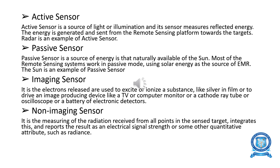Next, non-imaging sensors. Non-imaging sensors use electrons to excite or ionize a substance, and are related to image-producing devices like a TV, computer monitor, or cathode ray tube. A non-imaging sensor images radiation received from all points of its sensed target, integrates this, and reports the result as electrical signals representing the quantities of active sensor radiations.